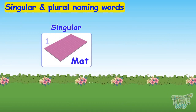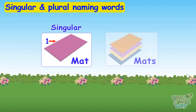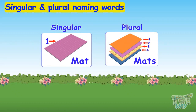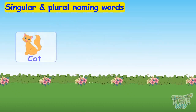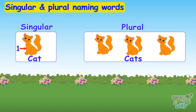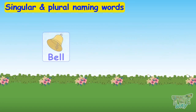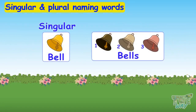It suggests that we are talking about one mat. It's a plural naming word and it suggests that we are talking about more than one. Similarly, bell and bells — you can see bells is a plural naming word.